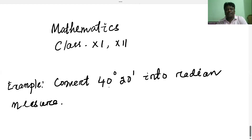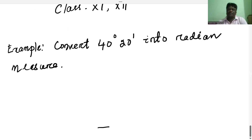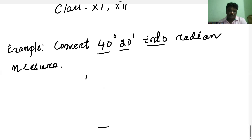Example: Convert 40 degrees 20 minutes into radian measure. We already know from the previous class that 180 degrees is equal to pi radian.